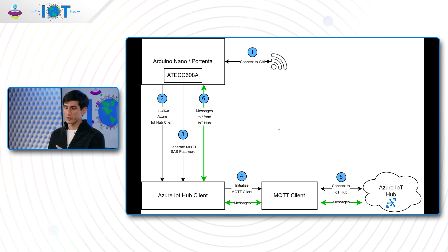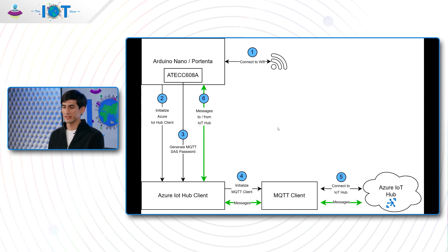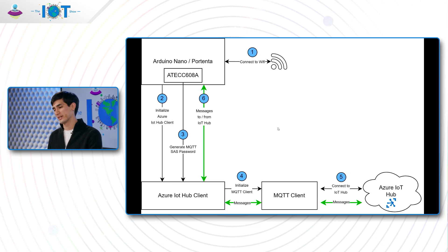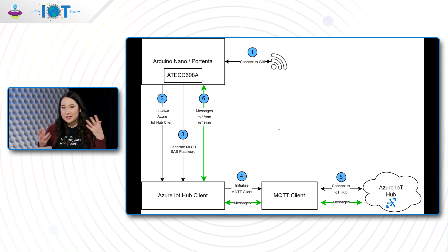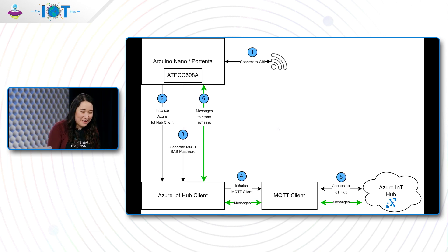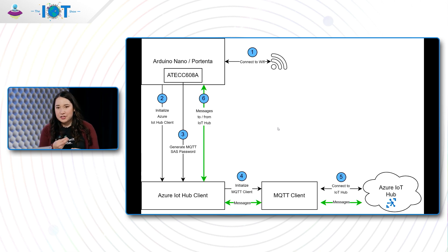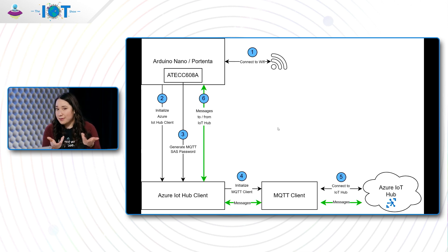Once we generate the MQTT SAS password, we can initialize the MQTT client, which lives under the Azure IoT Hub client. Once that is done, we can connect to IoT Hub using the credentials from the ATECC608A. Once this connection is established, the final step is that you can send messages to and from the IoT Hub for both samples — highlighted in the green arrows going from the Portenta all the way to Hub. This really emphasizes the bidirectionality of these samples.